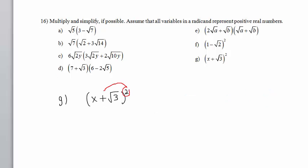Exponents never distribute over addition signs or subtraction signs. In other words, we can't square the 2 and square the radical here. That is totally mathematically illegal. What we can do is interpret the second power as repeated multiplication. X plus square root of 3 times X plus square root of 3.